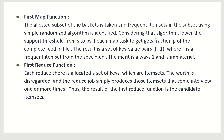In the first map function, the allotted subset of baskets is taken and frequent item sets in the subset are identified using the simple randomized algorithm. The support threshold is lowered from s to p*s, since each task gets a fraction p of the complete input file. The result is a set of key-value pairs (f, 1) where f is a frequent item set from the specimen, and the value is always one and is immaterial.